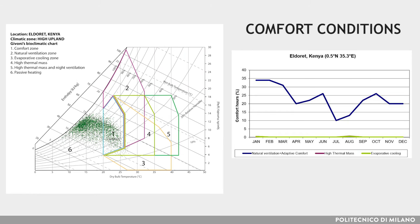Due to the altitude, daytime temperatures are never high, but nights are very cold. During most nights, temperatures are well below the comfort zone, and a rapid temperature drop takes place at sunset. The zone contains a large number of exposed localities with brisk winds and good air movement, which in cold weather may be uncomfortable. However, high wind velocities are uncommon.